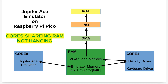If you're trying to use the two cores on the Raspberry Pi Pico and share RAM between them, and your application just hangs when it reaches the point where it's sharing RAM, then the solution I'm going to go over in this video is likely to resolve your issues.